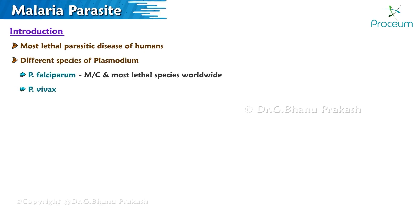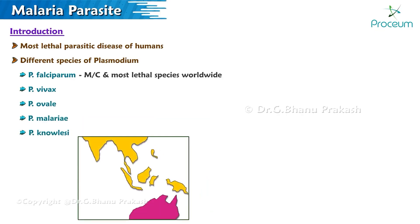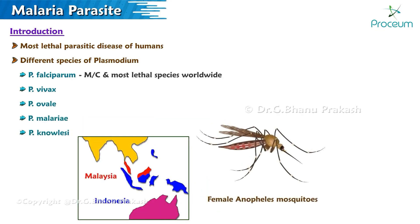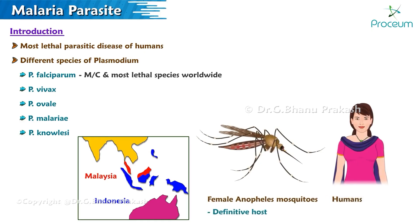Other species include Plasmodium vivax, Plasmodium ovale, Plasmodium malariae, and Plasmodium knowlesi, which is known to cause infection in Indonesia and Malaysia. Female Anopheles mosquitoes are the definitive host, and humans are the intermediate host.